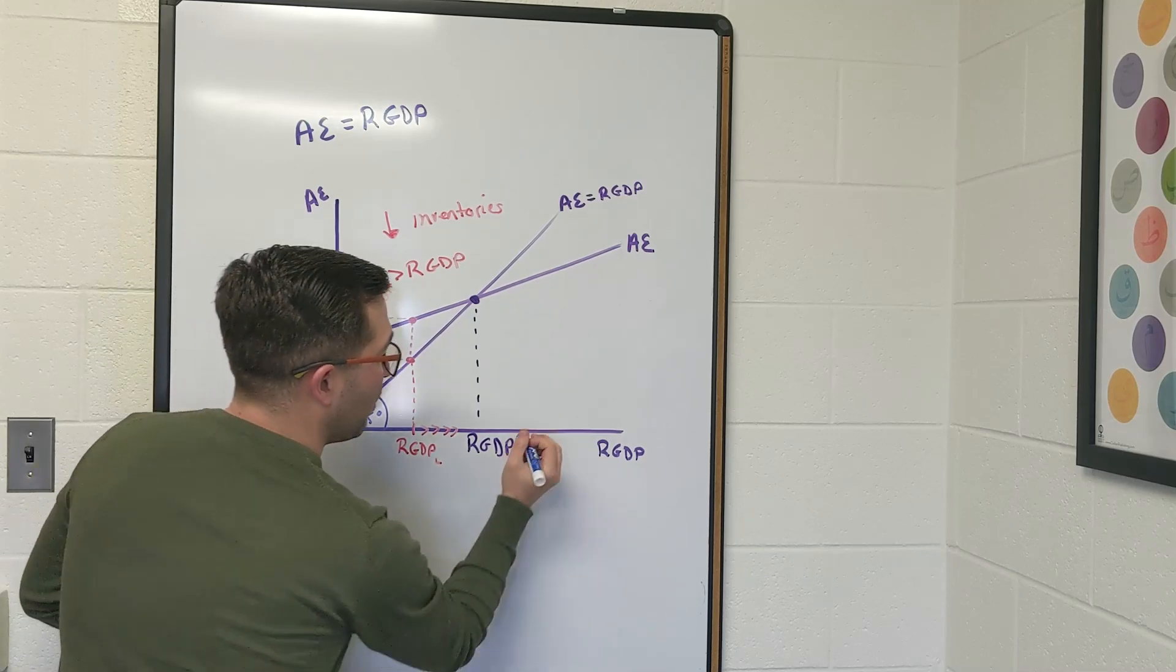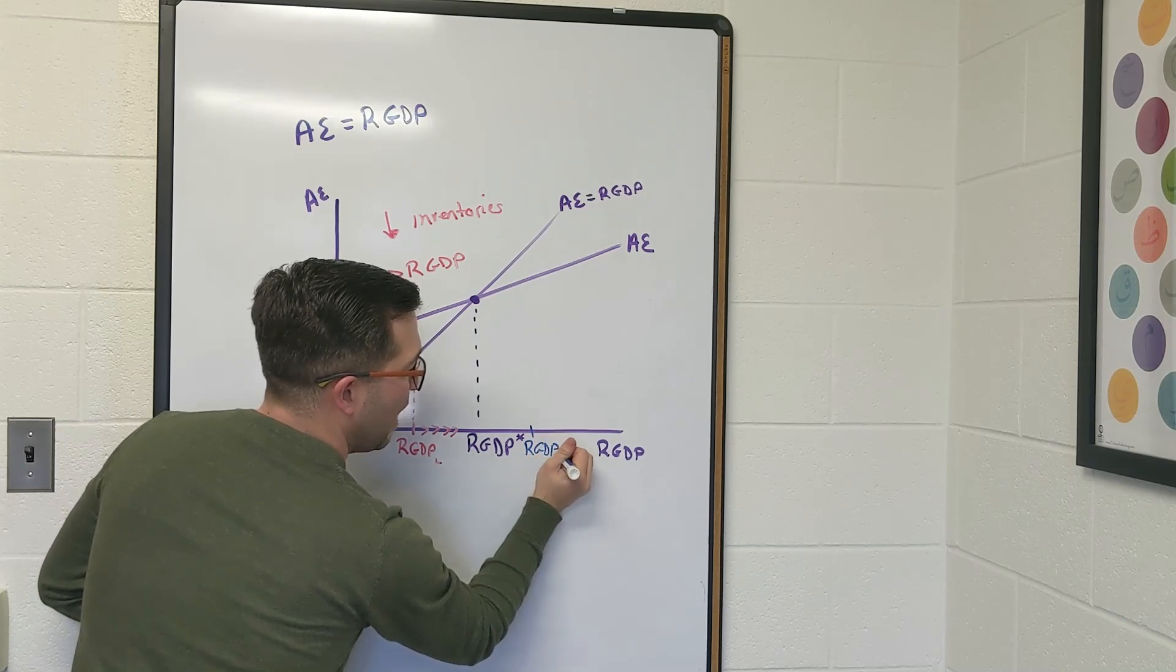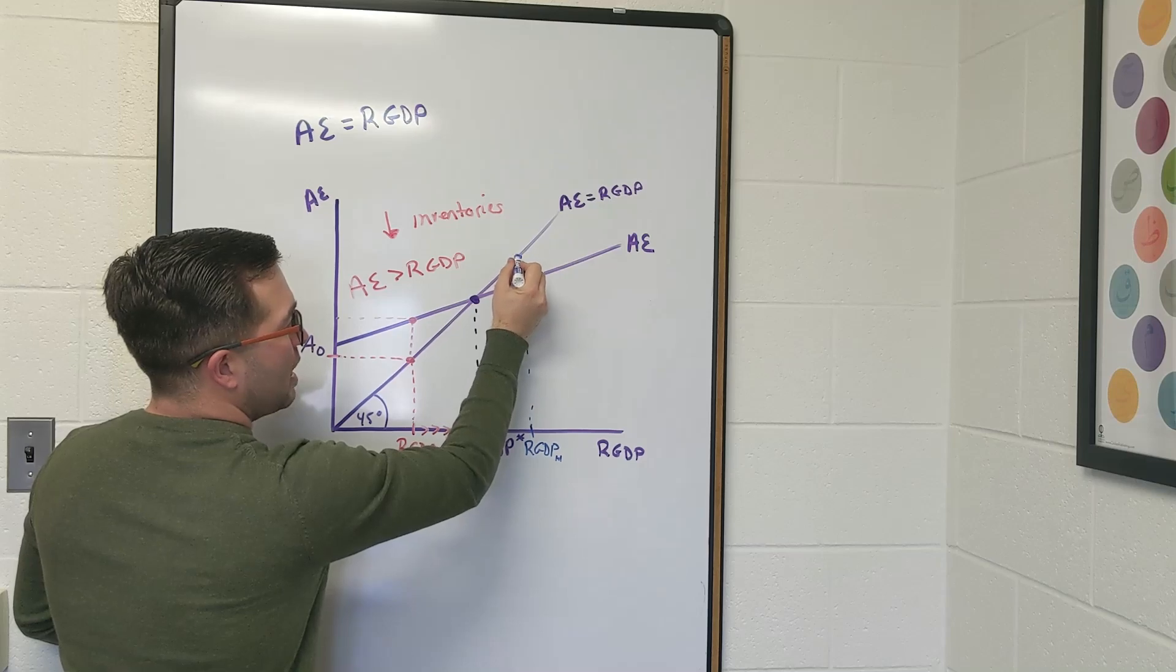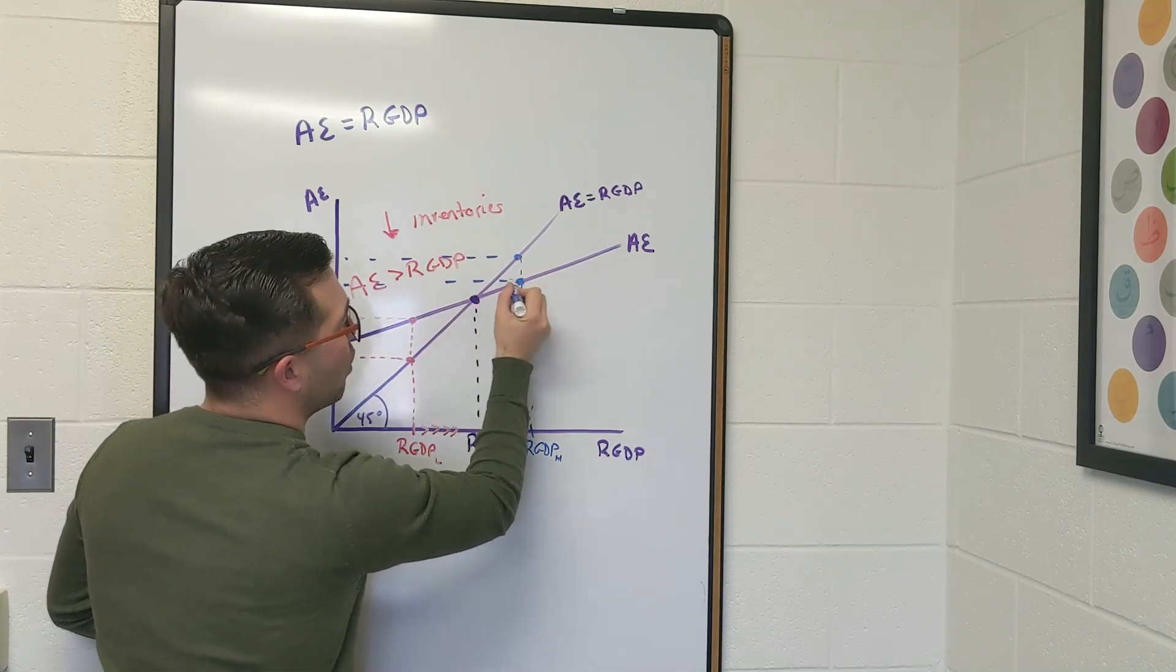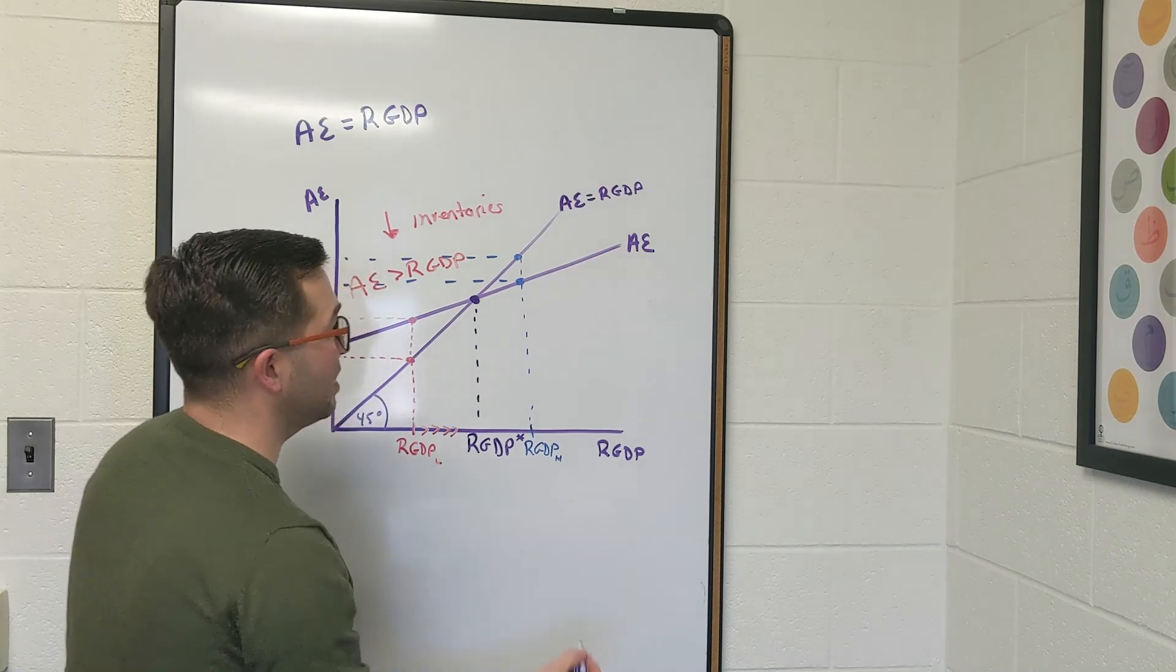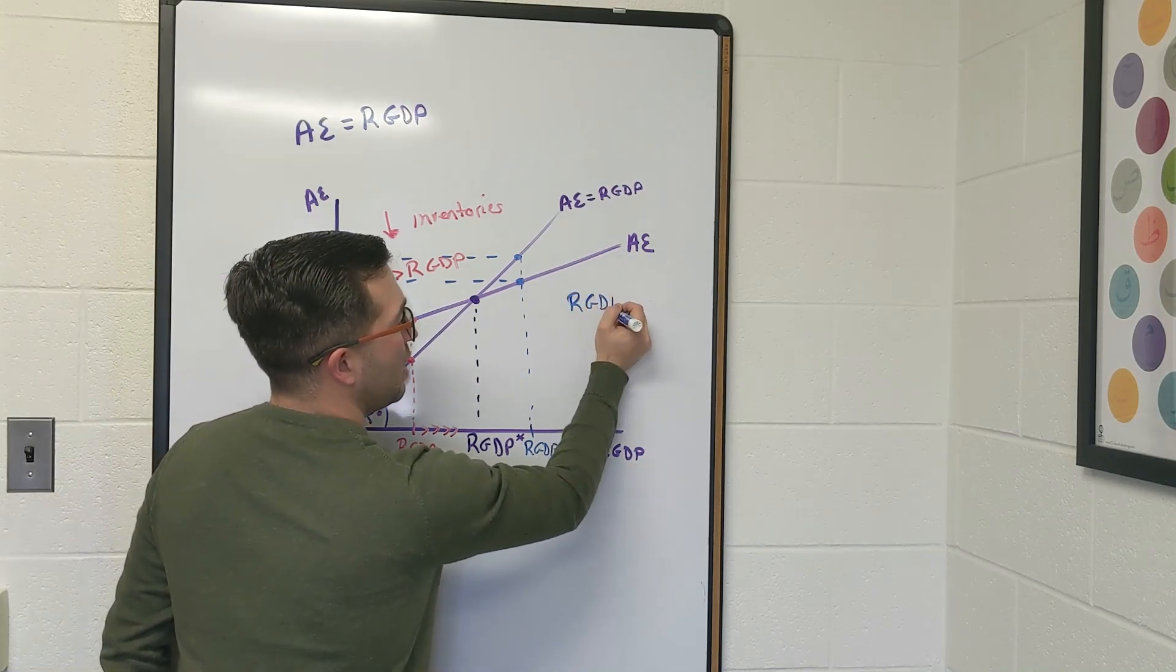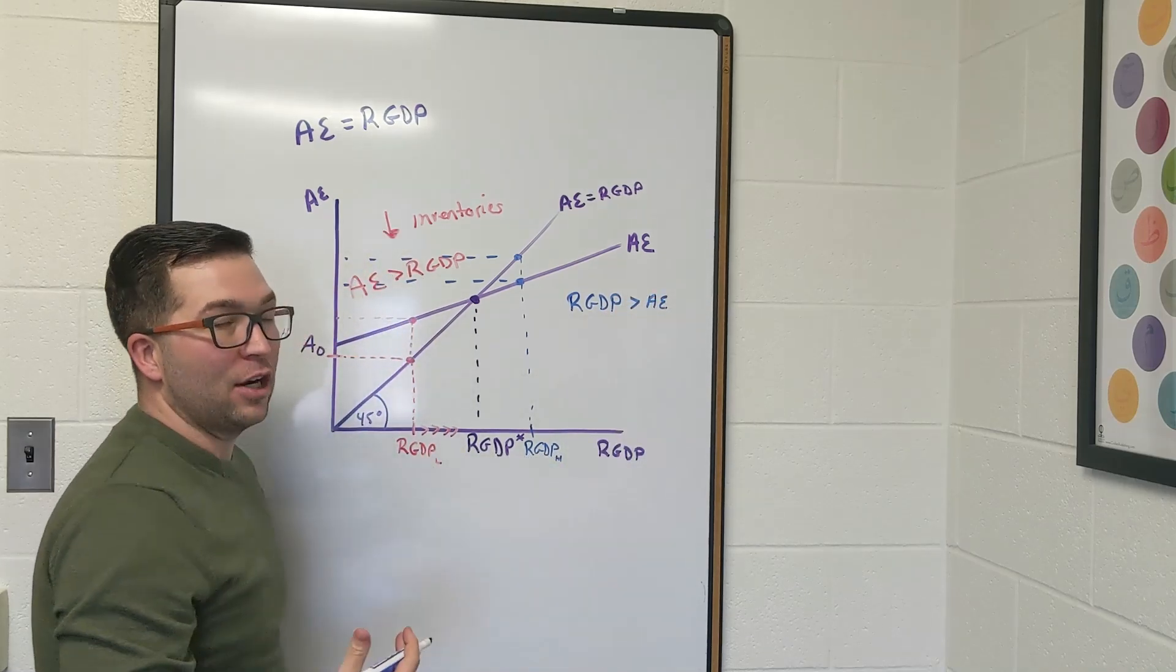On the flip side, what if we're over here? What if we have some real GDP, let's call this high. So we have a high level of production, which tells us that my production level is actually greater than the overall spending that's occurring in the economy. Again, this is to the right. So with our 45 degree line analysis, we know that this is the case where real GDP is greater than the aggregate expenditure.